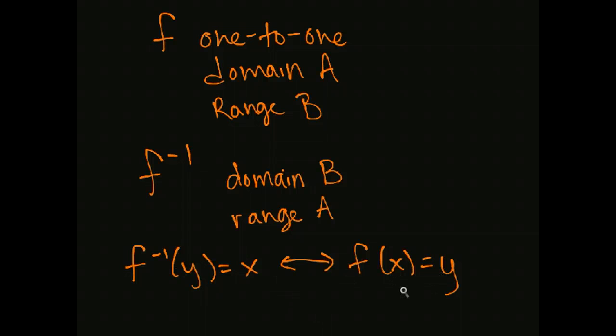So every time we have an ordered pair, this means f has ordered pairs that look like x, y's, and f inverse has ordered pairs that are the same terms but y, x's.